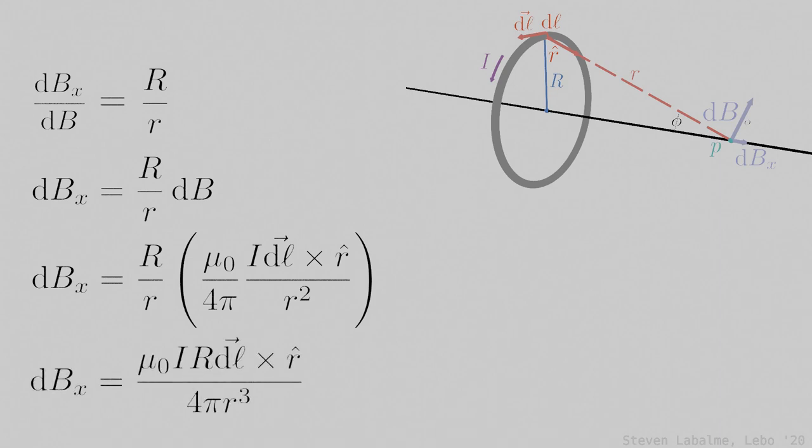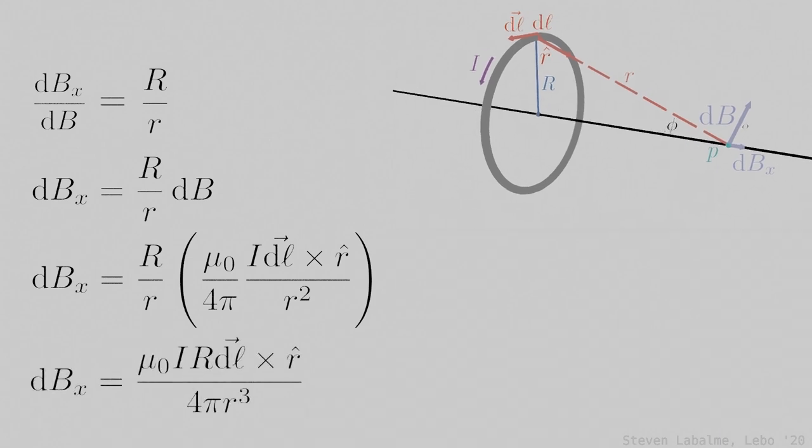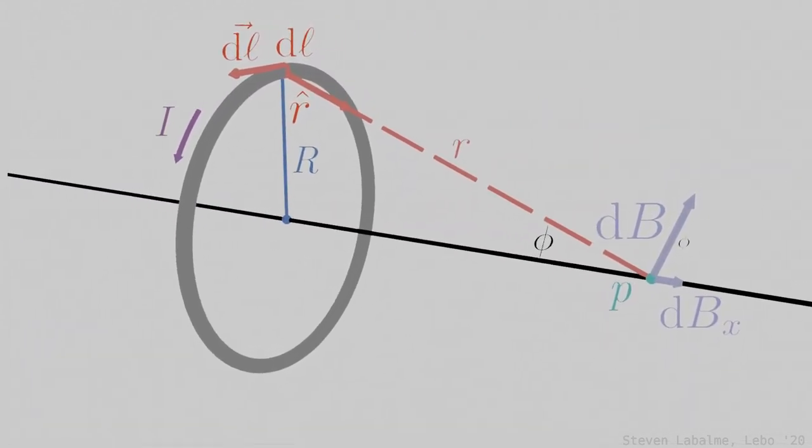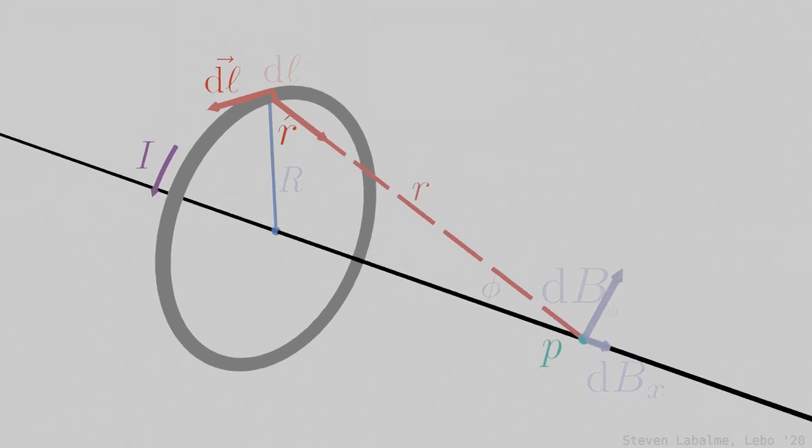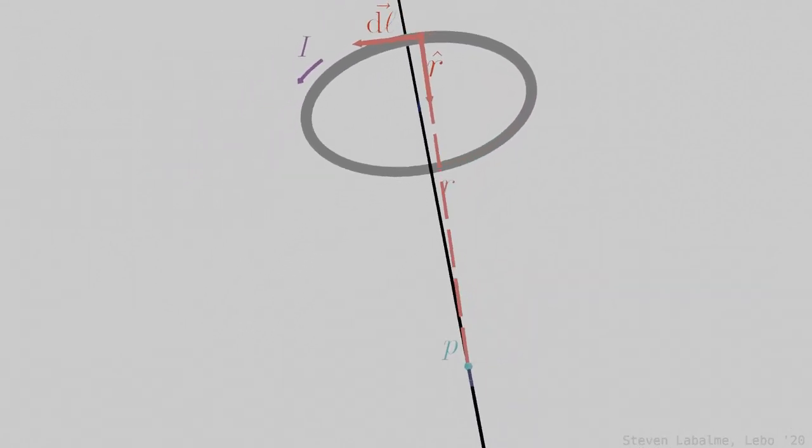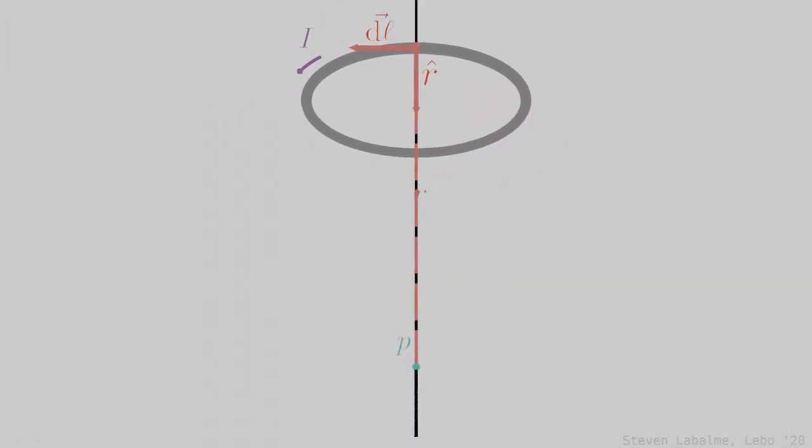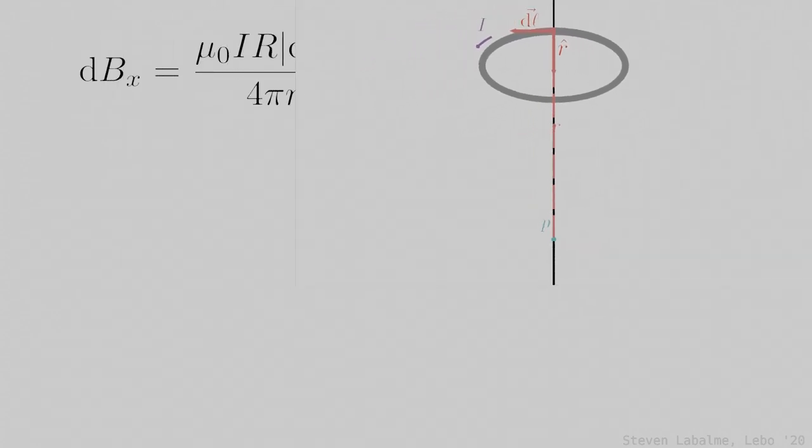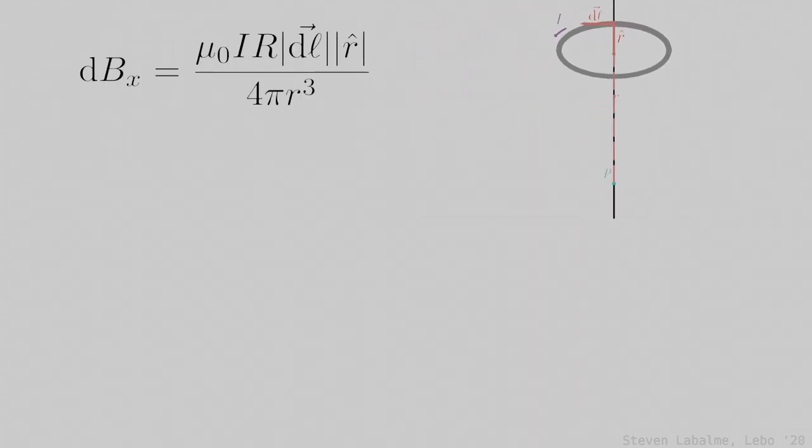Although it may not be initially clear, this diagram reveals that dl and r vectors are perpendicular. Viewed from above, the diagram makes this fact much more obvious. Owing to this, it is possible to substitute the cross product for the magnitude of the dl vector times the magnitude of r hat.